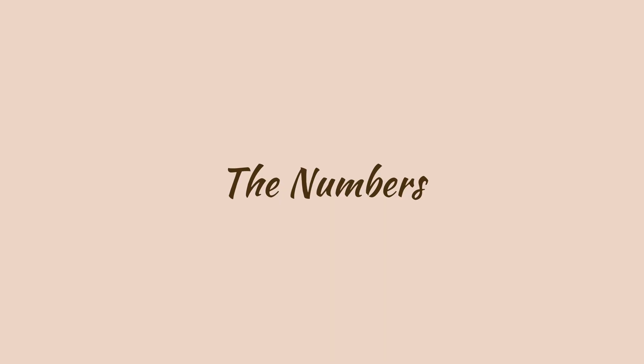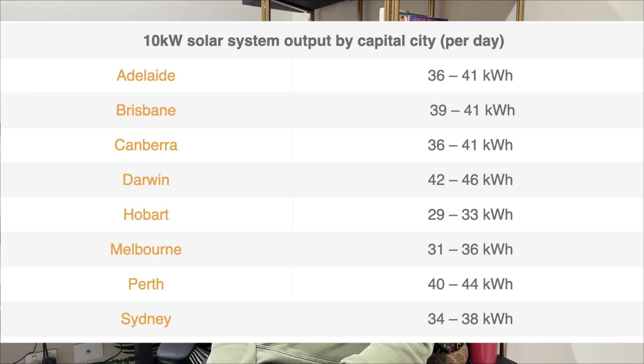Using your solar is worth eight times more than exporting it. Now that we have a basic understanding of what a solar system is, what the components are, and how solar works in Australia, let's talk some numbers. The annual average for a 10 kilowatt solar system in Sydney is roughly 39 to 40 kilowatt hours per day. In summers it may be higher, in winters it may be lower, but that's the annual average — a good reference point if you already have solar installed.